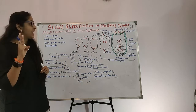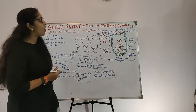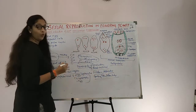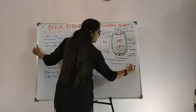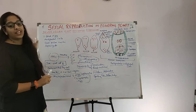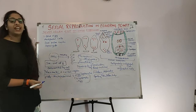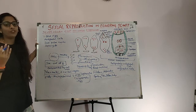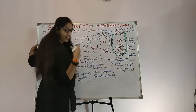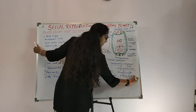Three smaller cells are found at the chalazal end, and these are known as antipodals. These three cells are vegetative cells and they degenerate before or after fertilization — they simply vanish.